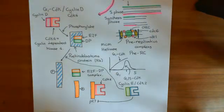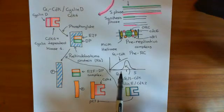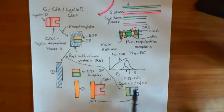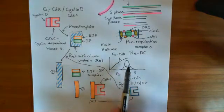So we're recapping at the moment the G1S transition. You've seen that towards the end of G1 phase, the levels of cyclin E CDK2 spike.